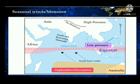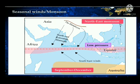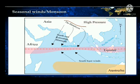From September to December, because of the low pressure area developing near the equator, winds blow from the Indian subcontinent towards the equator. These are called the north-east monsoon winds. They are dry winds.